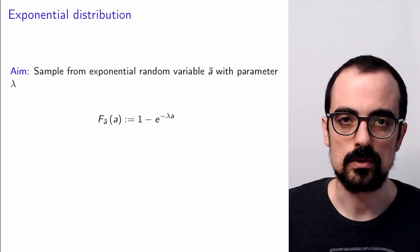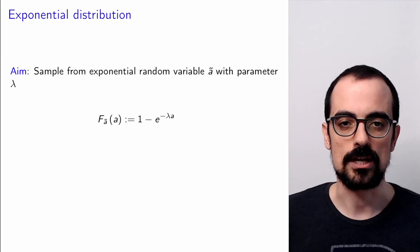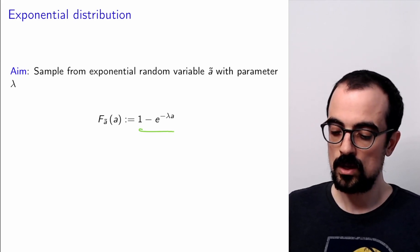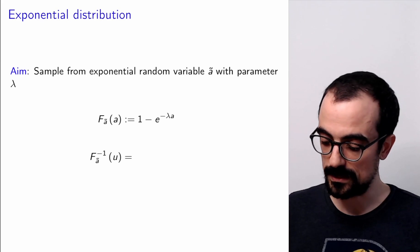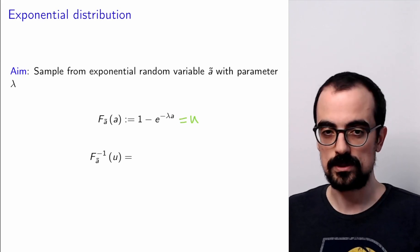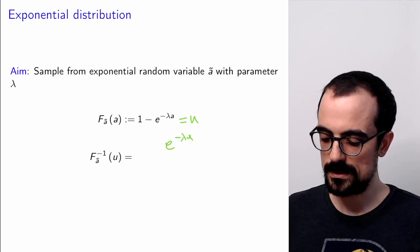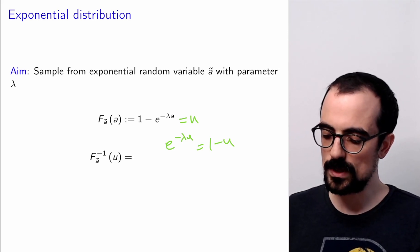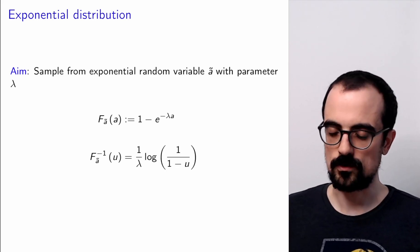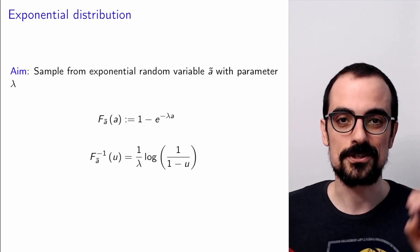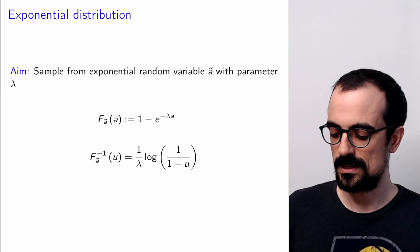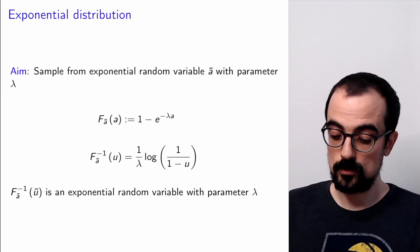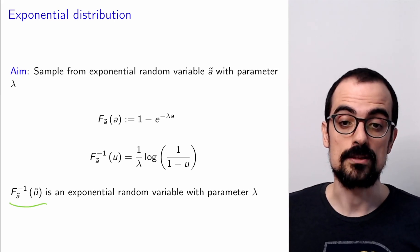Let's do an application: simulating an exponential random variable with parameter λ. The CDF is F(a) = 1 − e^{−λa}. We derive the inverse by setting this equal to u: e^{−λa} = 1 − u, then taking logarithms, giving a = −(1/λ) ln(1 − u). That expression is the mystery function — the inverse CDF for the exponential distribution. If you apply this to a uniform random variable, you get an exponential random variable with parameter λ.